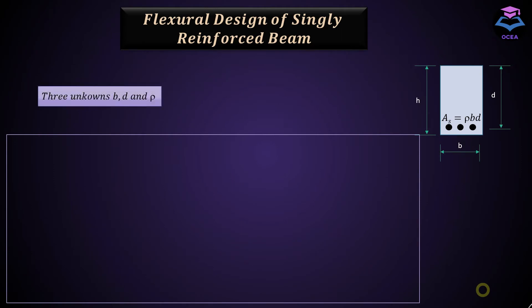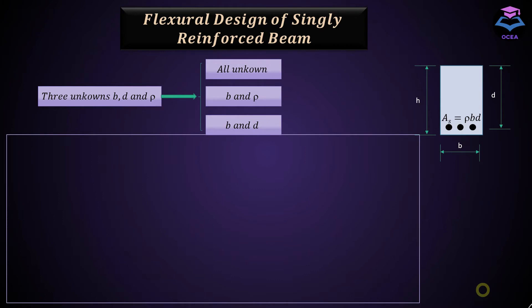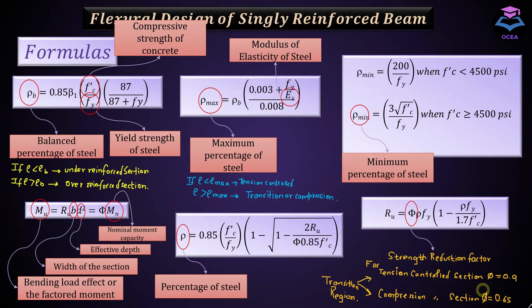In designing a beam section for flexure, we have three unknowns: the width of the section, the effective depth of the section, and the percentage of steel. There can be three cases. The first is when all quantities are unknown — we assume two practically and determine the last one. The second is when B and rho are known and we determine the effective depth. The third is when the cross-sectional properties B and D are given and we calculate the percentage of steel. In all cases, the previous equations are used depending on the case we are dealing with.